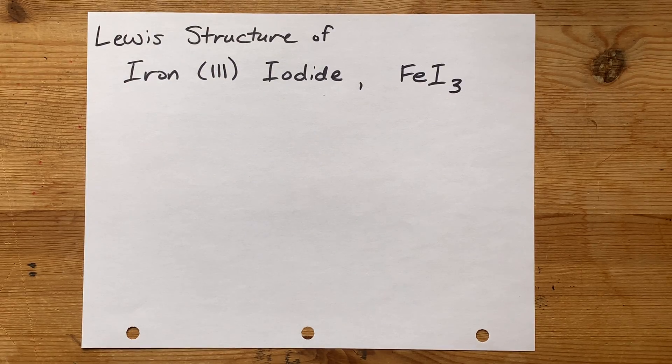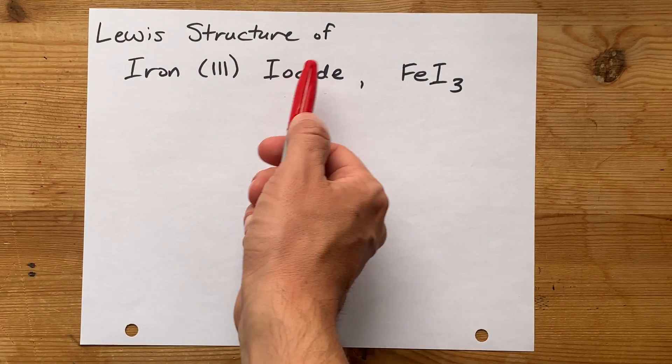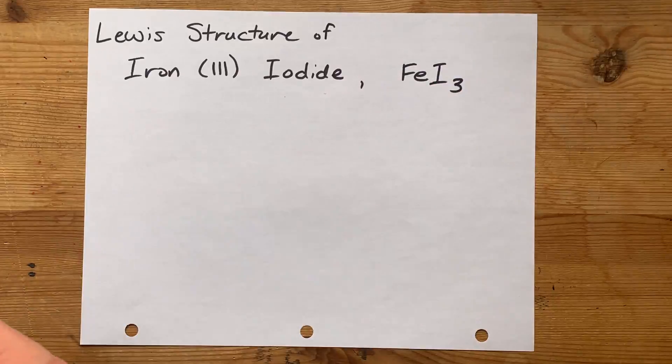We're going to draw the Lewis structure for iron 3-iodide, which is FeI3.